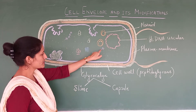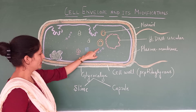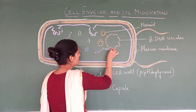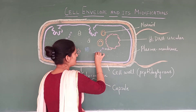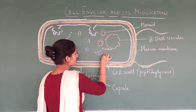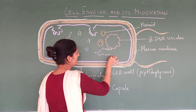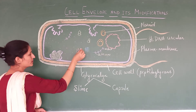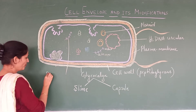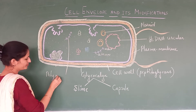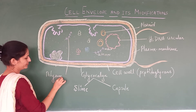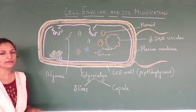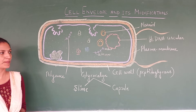You can see mRNA plus ribosomes — these are ribosomes which are attached to mRNA. This structure is going to be a polysome. This will help in protein synthesis in the bacterial cell.